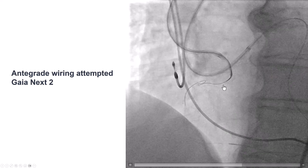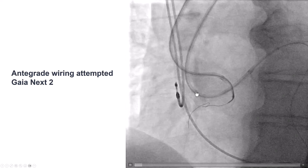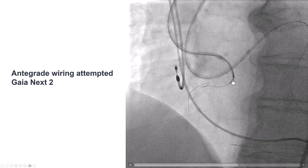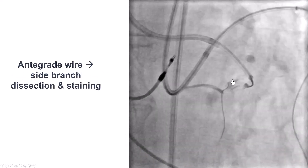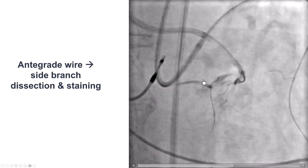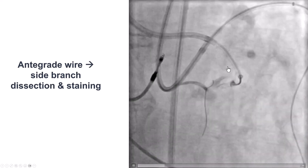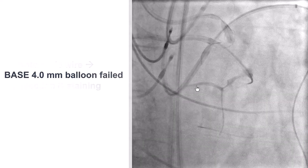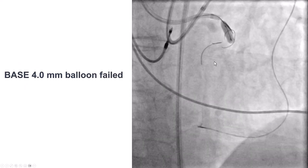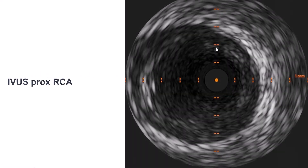We then decided to try some antegrade crossing attempts to make the reverse CART, using a Gaia Next 2 wire. However, the wire kept ending in a small branch. We did have some retrograde dissection, but were unable to make the antegrade wire go into the extraplaque space. We therefore decided to use the BASE technique — balloon-assisted subintimal entry — using a large 4.0 mm balloon with an antegrade microcatheter next to it, trying to push and create a dissection and a loop into the extraplaque space antegrade.